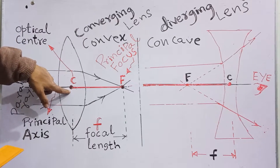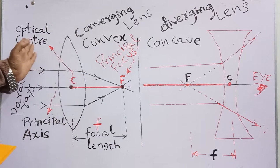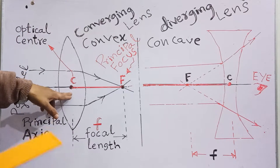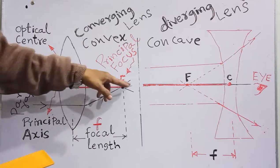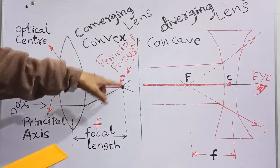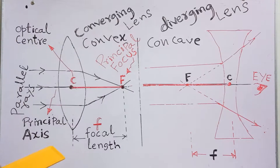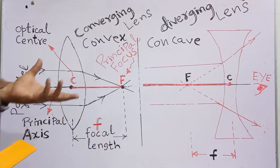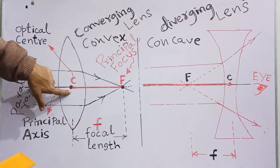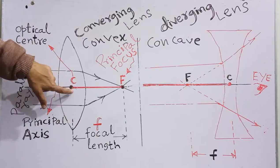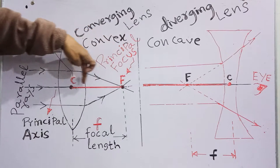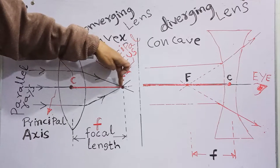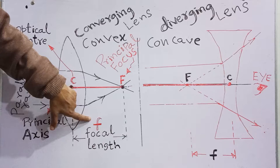C is the center of the lens. According to the definition, the center of any lens is called its optical center. The point of convergence on the principal axis is called the principal focus, shown by capital F. The focal length of a lens is defined as the distance from the optical center of the lens to the principal focus of the lens. This distance is always written or symbolized by small f.